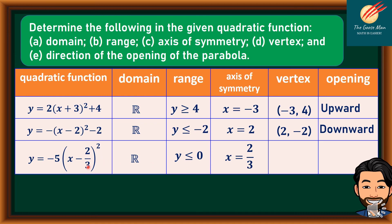The axis of symmetry is x = 2/3, because the additive inverse of −2/3 is positive 2/3. The vertex is (2/3, 0) — the opposite of −2/3 and k = 0. And the opening is downward.